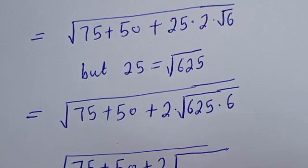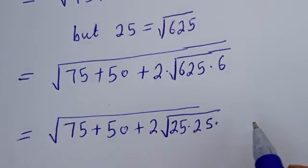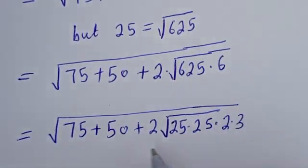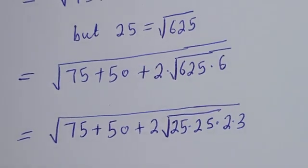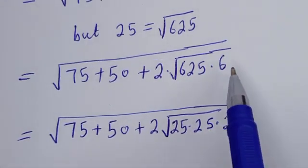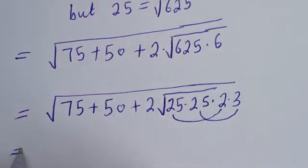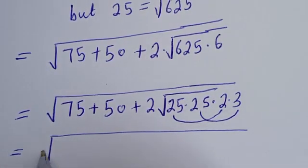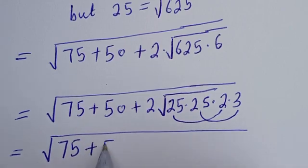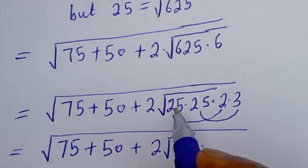This is equal to square root of 75 plus 50 plus 2 times square root of 625 times 6. Now 625 can be written as 25 multiplied by 25, and 6 can be written as 2 multiplied by 3. So this gives us square root of 75 plus 50 plus 2 root 25 times 3 times root 25 times 2.